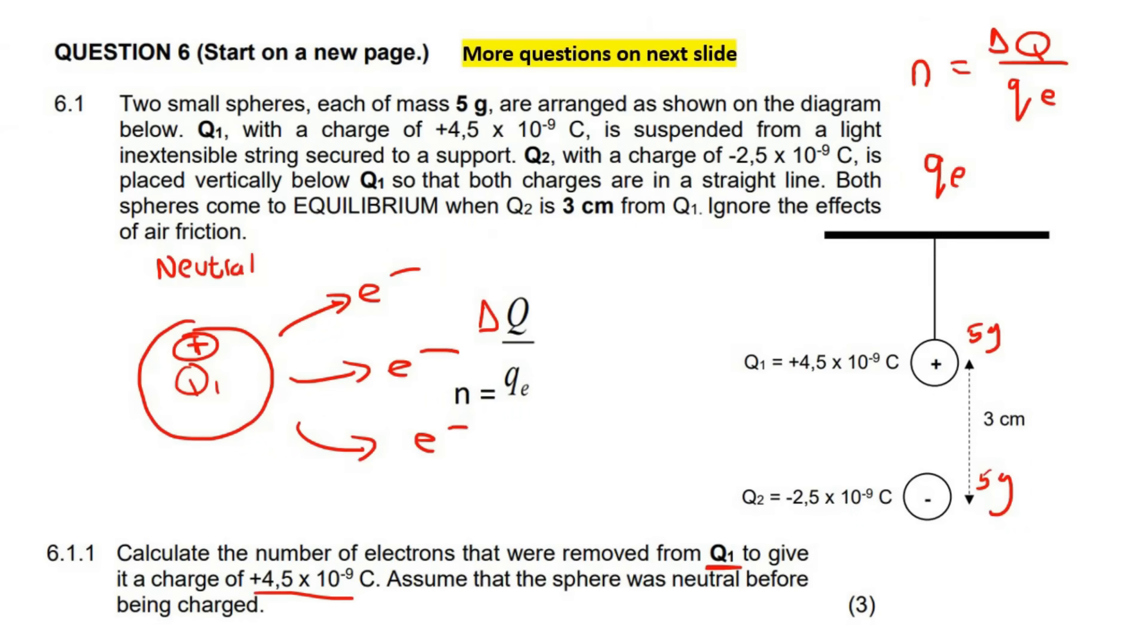So let's write that down: negative 1.6. We know electrons are negative. So what we can do is work out - what you got to understand is that Q1 was originally neutral. What does that mean? It had a charge of zero coulomb. Then all of a sudden it has a charge of 4.5 times 10 to the minus 9. So that is how much the charge changed by.